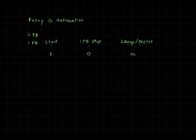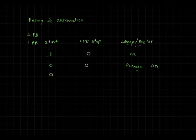The second condition: if the lamp is already on and I press the stop button, the lamp should immediately turn off. If I then release the stop button without pressing start, the lamp should remain off. So the lamp stays on when start is pressed and released, and turns off when stop is pressed and remains off when stop is released.